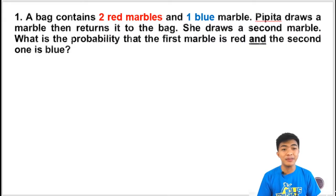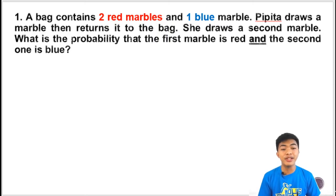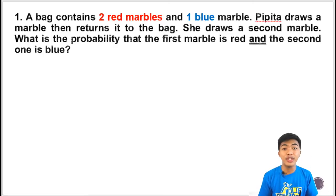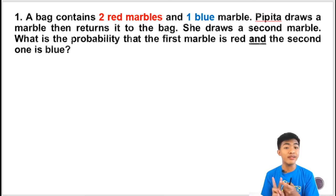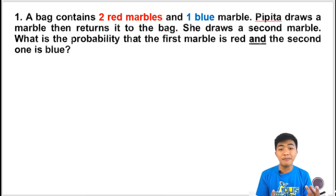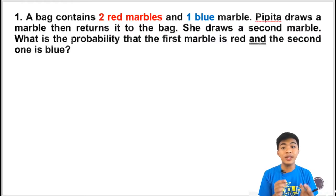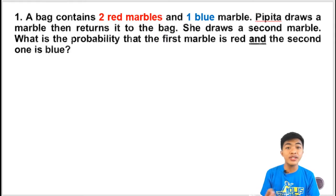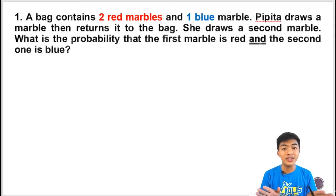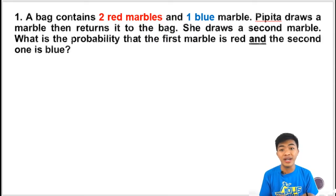A bag contains two red marbles and one blue marble. Pipita draws a marble then returns it to the bag. She draws a second marble. What is the probability that the first marble is red and the second one is blue? In this problem, she will be getting two marbles. The first event is getting red, and the second event is getting blue. This is an example of an independent event because the second event is not affected — since, as stated in the problem, after she drew the first marble, she returned it. So nothing changed in the sample space; the number of marbles in the bag remained the same.